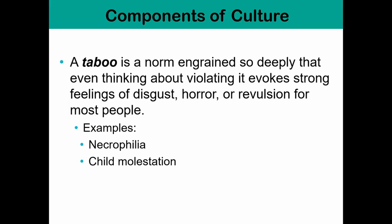A taboo is an incredibly intense mores — a norm ingrained so deeply that even thinking about violating it evokes strong feelings of disgust, horror, or revulsion. This is the strongest of norms, the type we feel uncomfortable even talking about. Examples include necrophilia, which is sex with a corpse; cannibalism; and child molestation. Child molestation really drives home the strength of the taboo — when someone violates a taboo, we are often driven to want to hurt the person who does that thing.